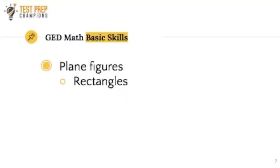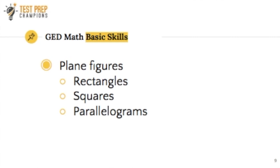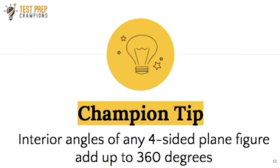Let's start with plane figures. You'll need to be able to identify the following plane figures: the rectangle, the square, parallelograms, the rhombus, and the trapezoid. You need to be able to identify them, but you also have to know a little bit about their properties. Here's one big key tip: you need to know that the interior angles of any four-sided plane figure add up to 360 degrees. You may be given one of these figures where they take out one of the angles and tell you to figure out what the missing angle is.